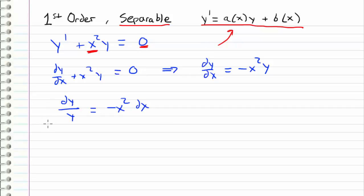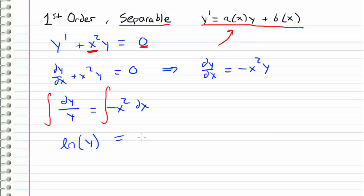All we have to do now is integrate both sides. From our knowledge of calculus, we know that the left side integrates to the natural log of y. And the other side integrates to negative one-third x cubed plus a constant of integration.